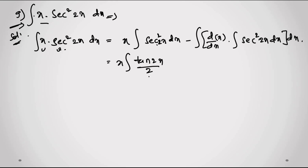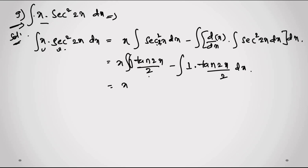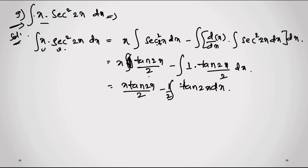So it becomes: x·tan(2x)/2 minus integral of 1·tan(2x)/2 dx. We still need to evaluate the integral of tan(2x) dx. This gives: x·tan(2x)/2 minus (1/2)·integral of tan(2x) dx.